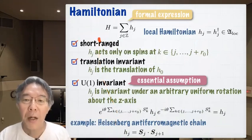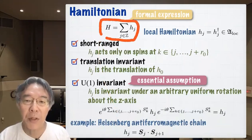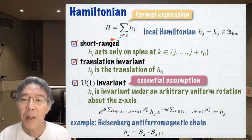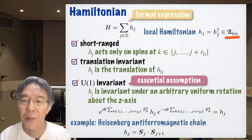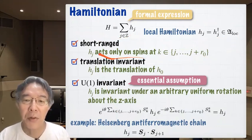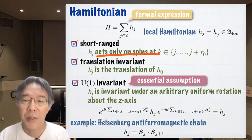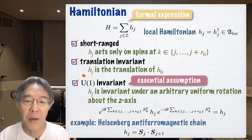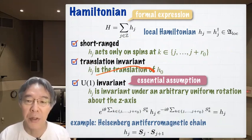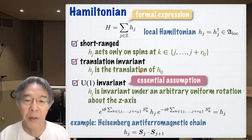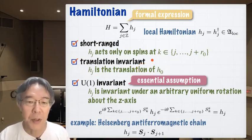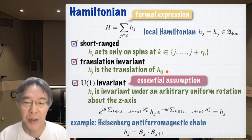Now let me talk about the Hamiltonian. This is a usual but formal expression because it is an infinite sum. The basic object is H_j, which I call the local Hamiltonian, an element of R-loc. I assume it is short-ranged — there is a constant R_0 and H_j acts on a finite portion of the chain. I also assume translation invariance: H_j is obtained by translating H_0.